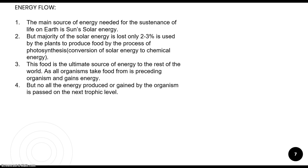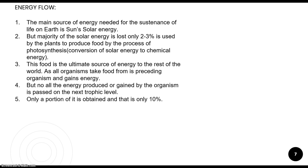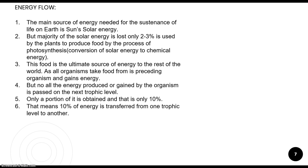All the energy produced by organisms passes on to the next trophic level. Only a portion of this energy is transferred from one level to another. This transfer of energy from one level to another involves only 10% from the previous level — this is known as the 10% law of energy flow.